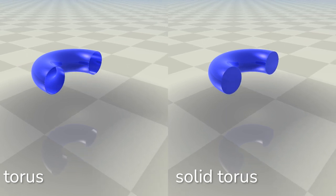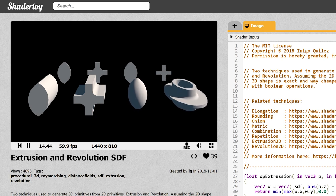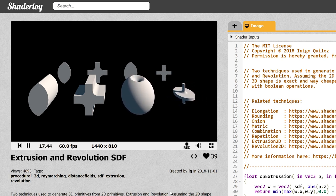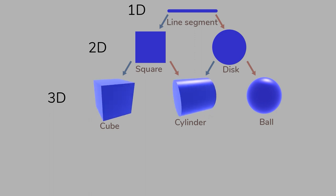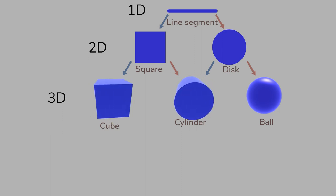A common thing to do with ray marching is to make a 3D shape out of a 2D shape. There are two main methods for this: extrusion and revolution. Those methods can work with other numbers of dimensions too. If you start with a zero-dimensional point, you can extrude it to a one-dimensional line segment, but you can't revolve the point because rotation happens in a 2D plane. Starting with a line segment, I can extrude it to a square, or rotate it to get a disk. Then I can extrude the square into a 3D cube, or revolve it to get a cylinder. The revolution of a disk gives us a ball, and the revolution of the disk also gives us the same cylinder we got from revolving a square.